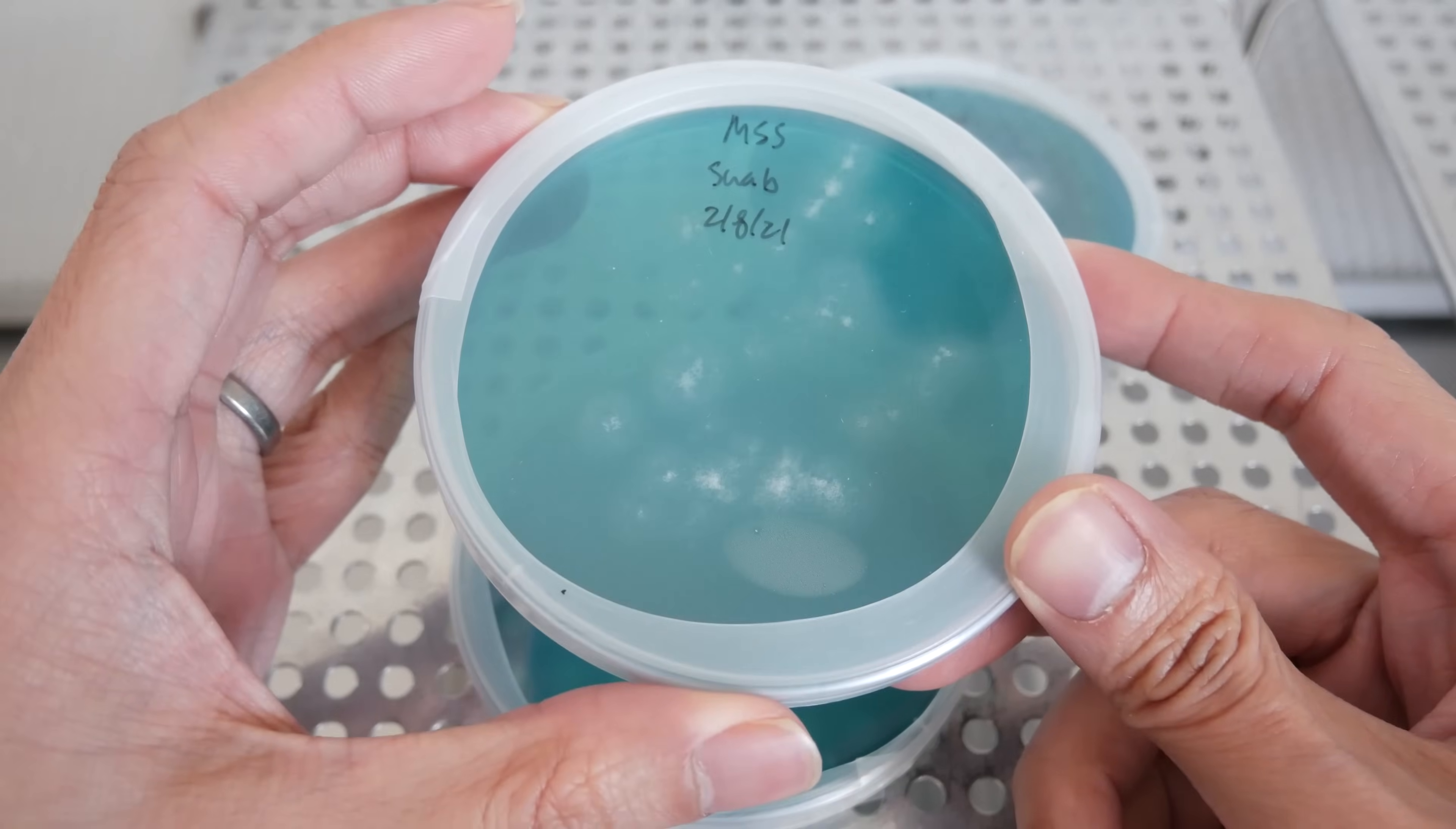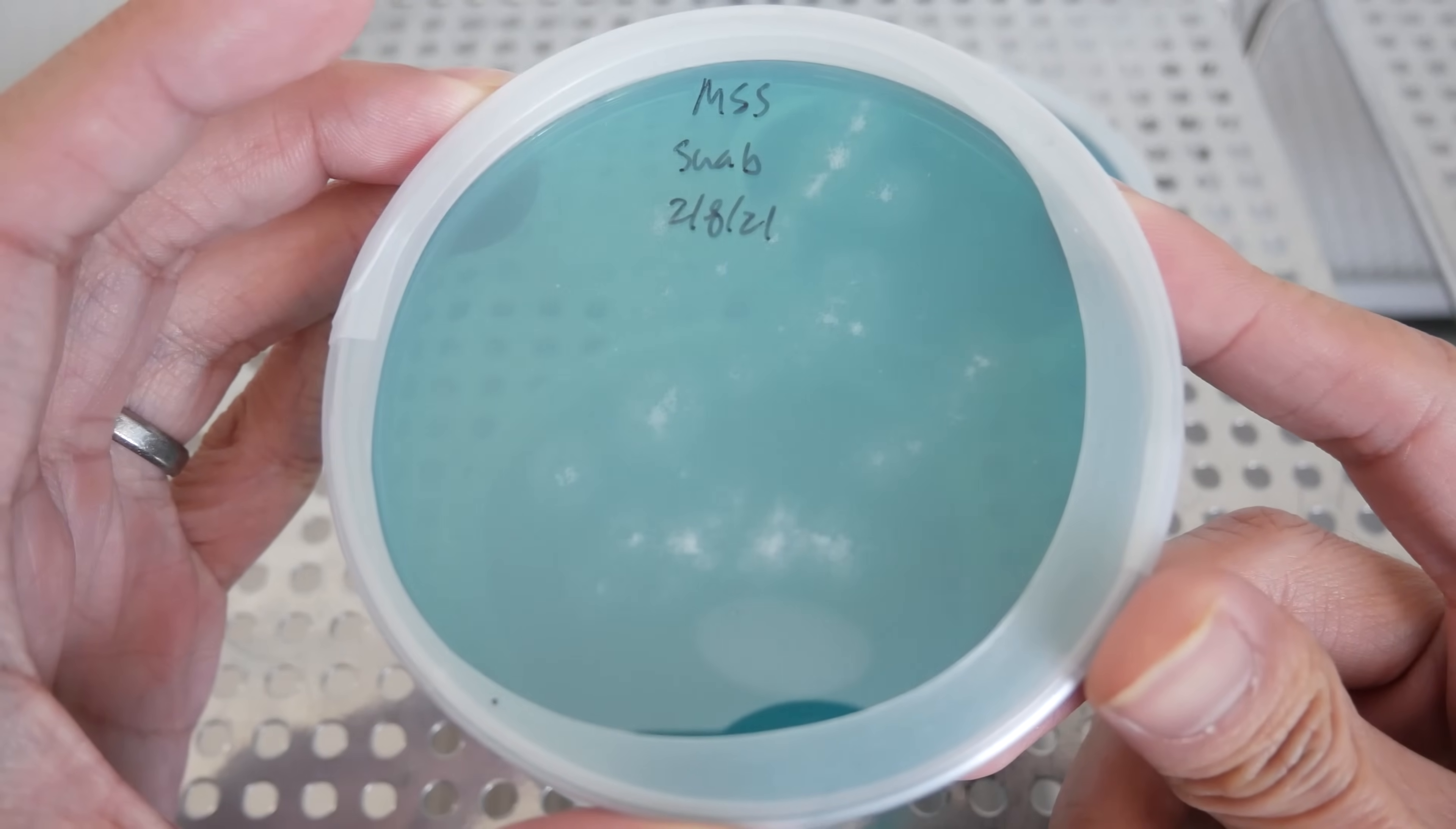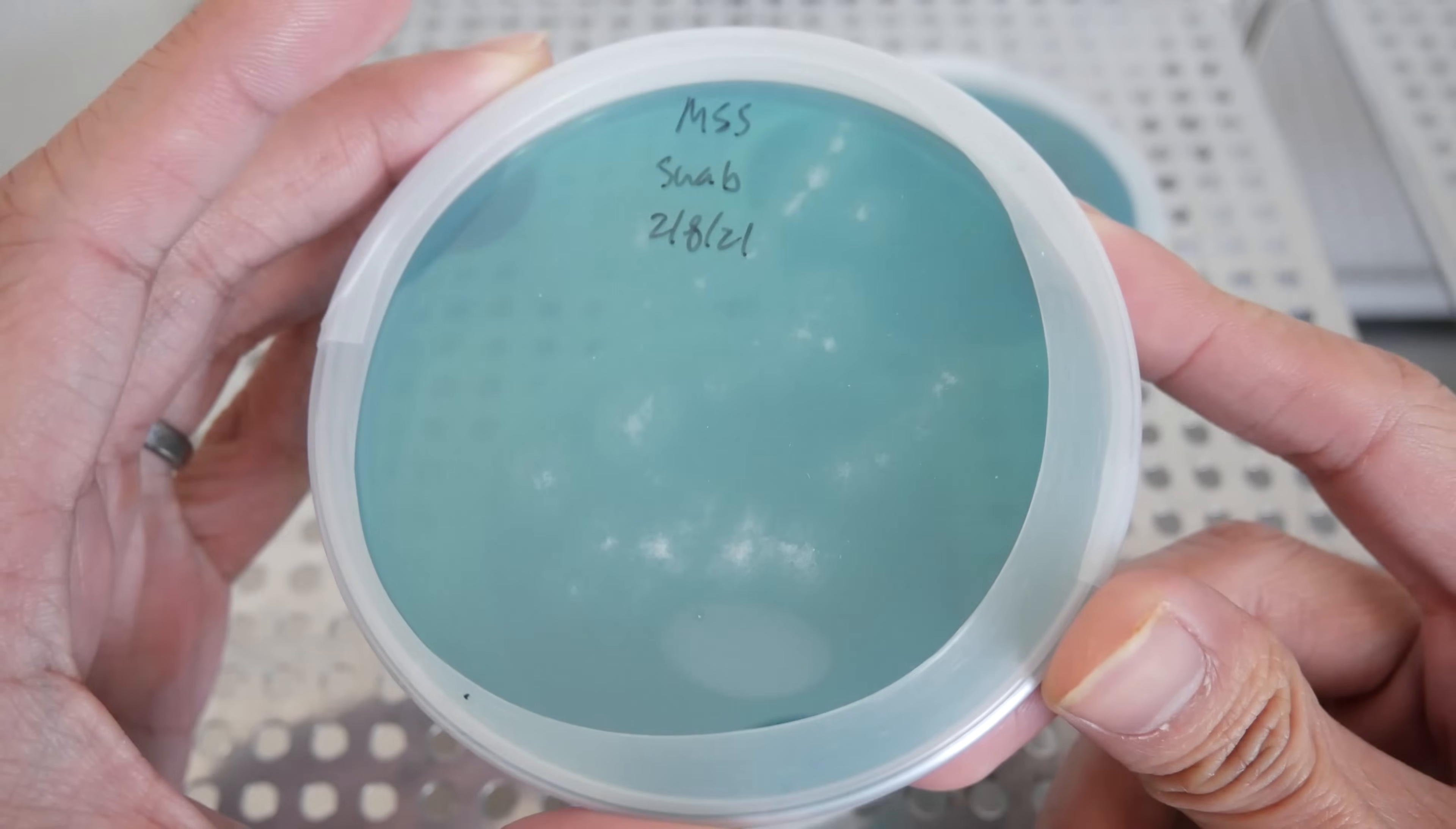Here's the swab plate. Since we streaked swab across the plate, there's going to be multiple inoculation points for the spores, so you end up with multiple germination points. I find the success rate of germinating spore solutions a lot higher with the swab and the inoculation loop.